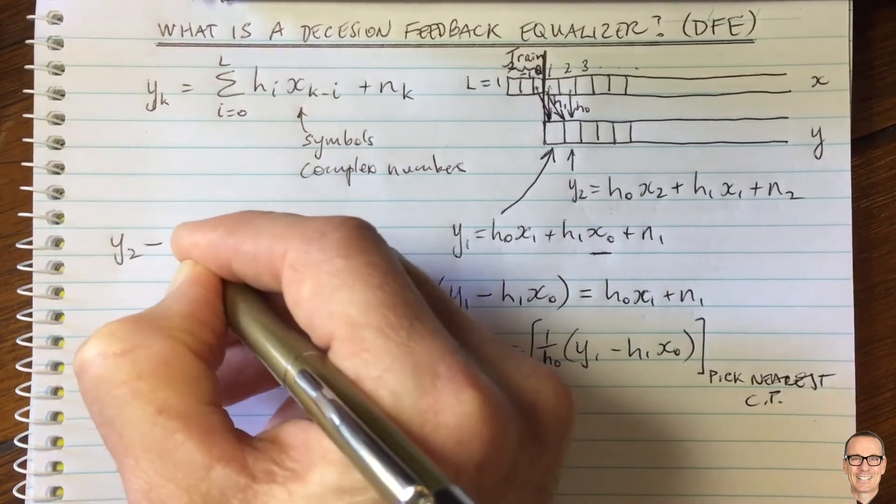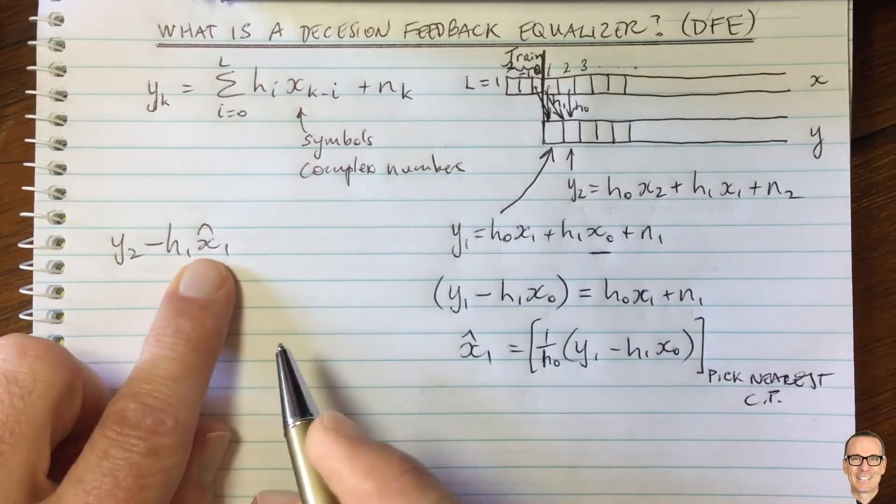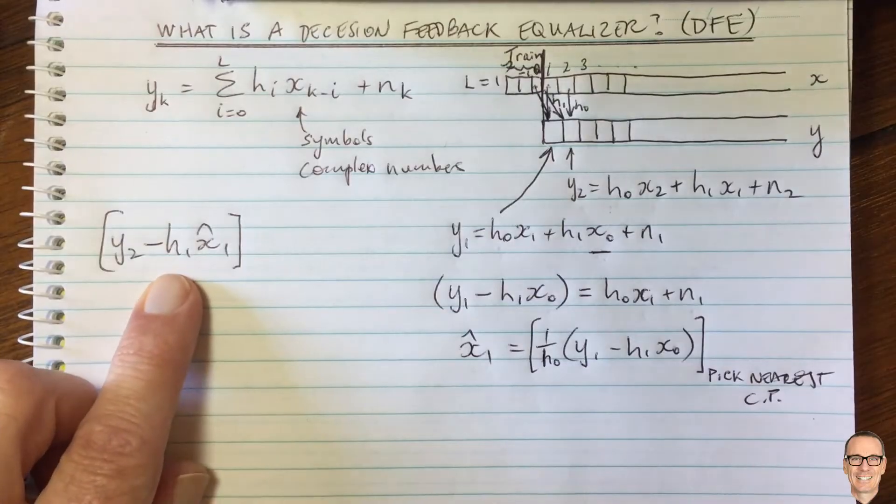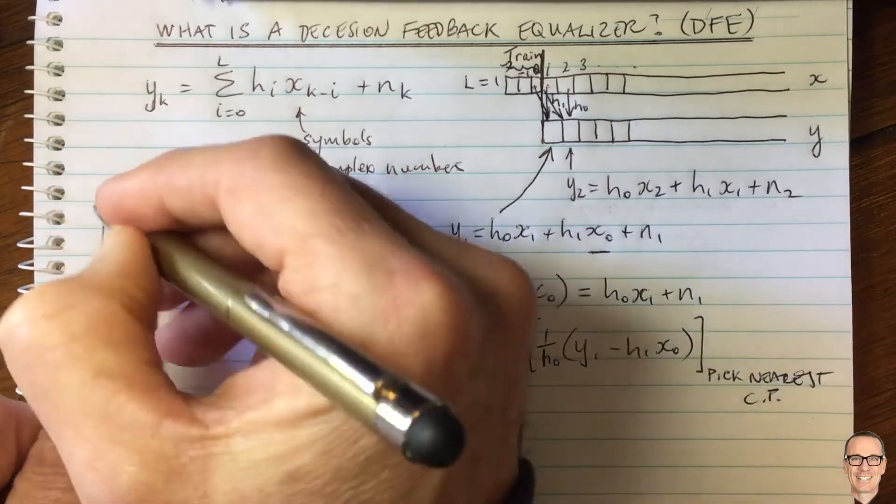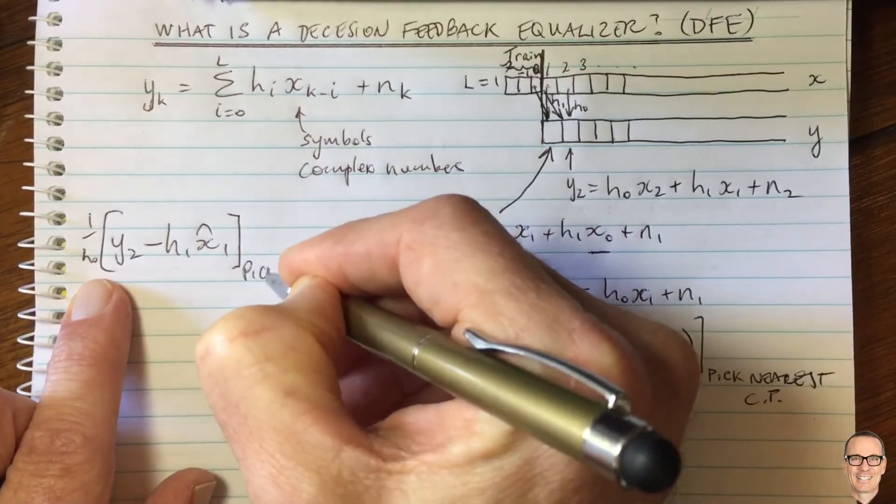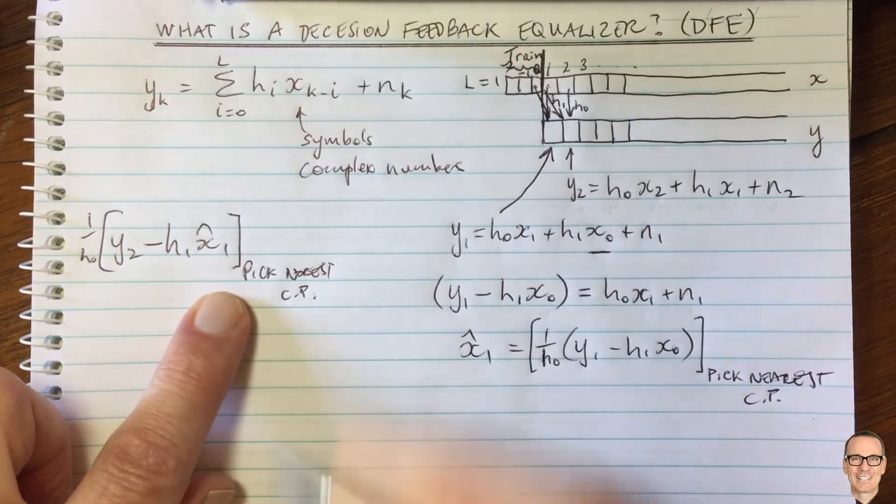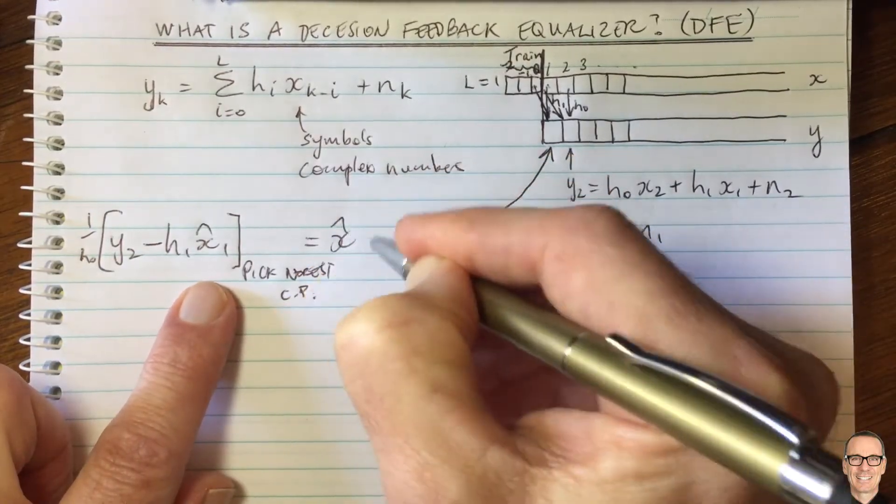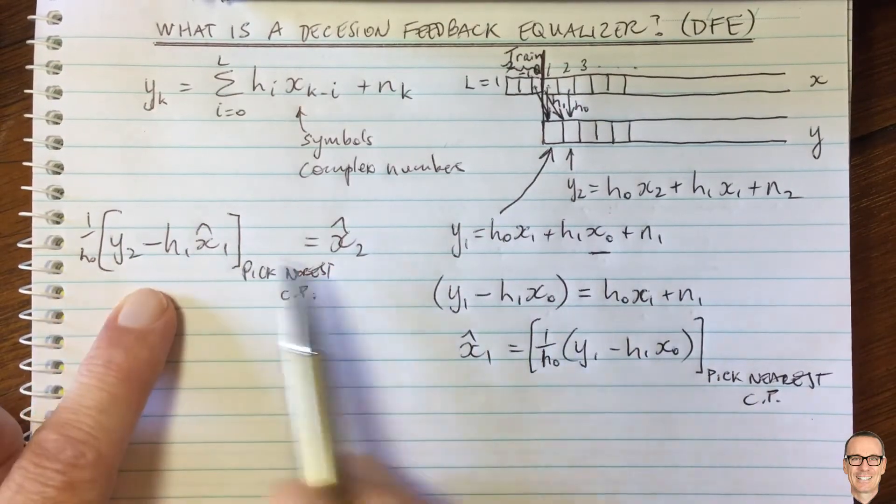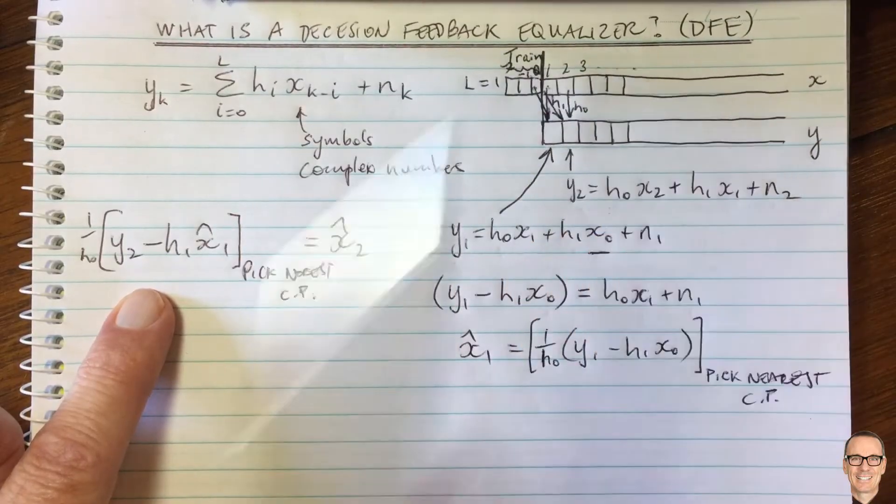And then you'll be feeding it back by putting it into the next measurement and adjusting the next measurement by that decision. So we'd take y2 minus h1 x1 hat, which is the estimate that you've estimated. And then you could divide that again by 1 on h0. And then you could pick again, pick the nearest constellation point. And this would give you an estimate for x at time 2. Okay, and you could continue to repeat this process, making decisions, feeding them back, and you would be equalizing the channel.